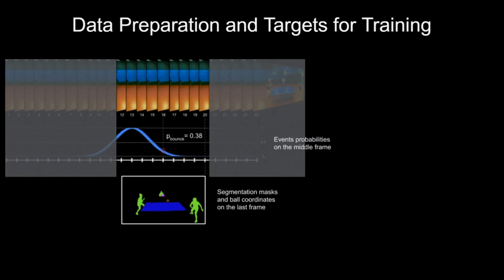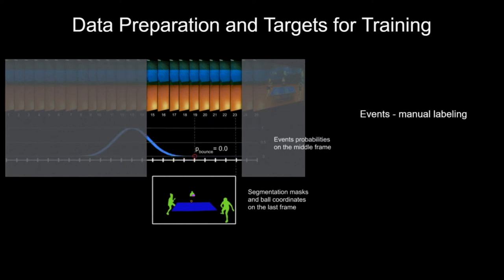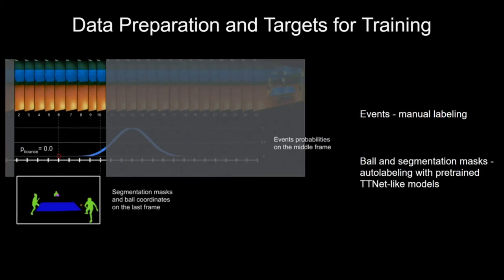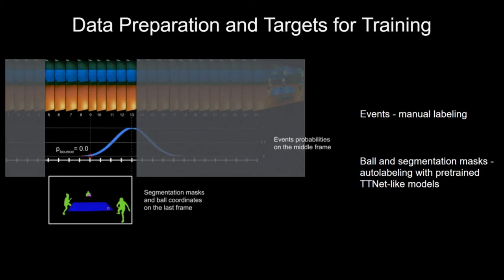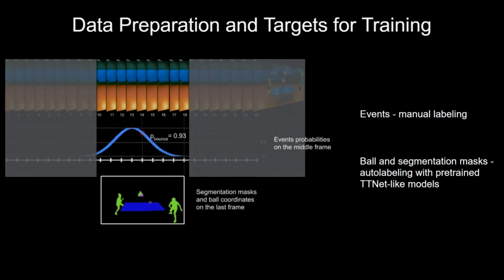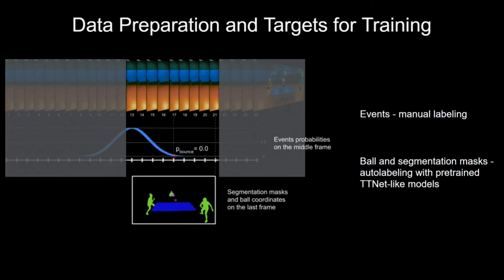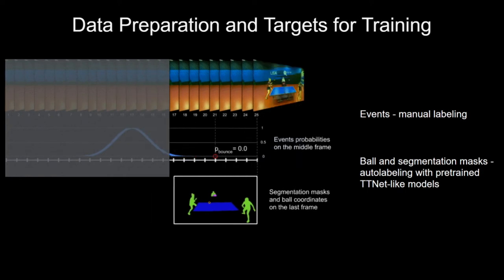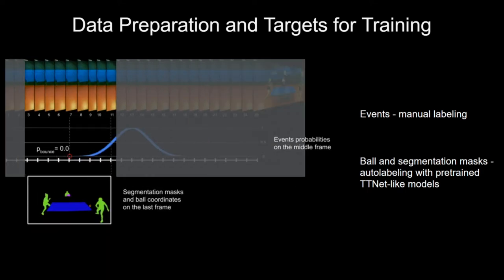The event frames were manually labeled, whereas the ball target positions and semantic masks were produced by an auto-labeling system. It comprises individual neural networks which are similar to corresponding TTNet branches and were trained with a manually labeled subset of frames.